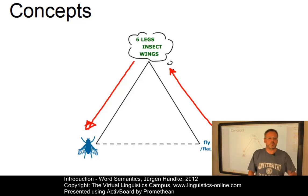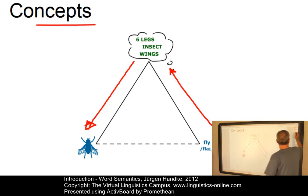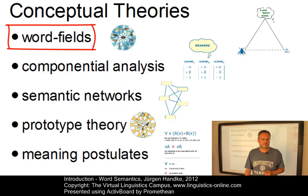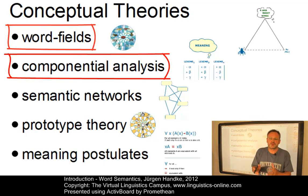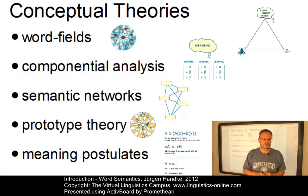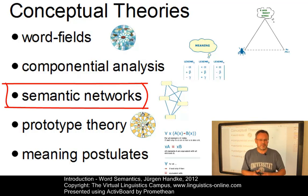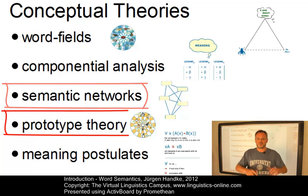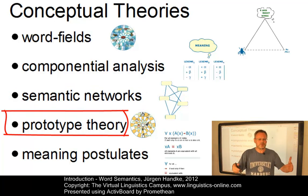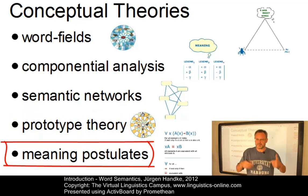The problem is knowing what form these concepts take. There are several theories to establish the relationship between concepts. For example, we have the word field theory, the theory of componential analysis where meaning is defined by atomic components, semantic networks from computational approaches, the prototype theory as a more cognitive approach, and finally the theory of meaning postulates, which is a logic-based theory of word meaning.